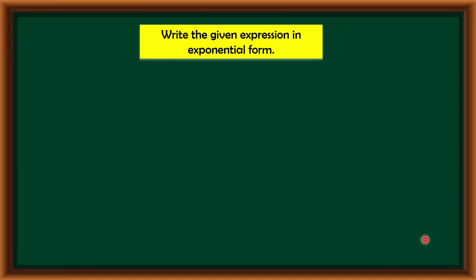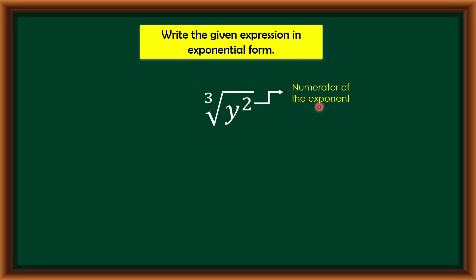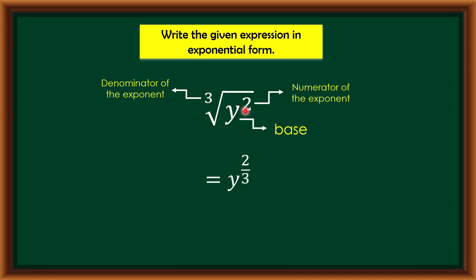Let us now move on to writing the given expression in exponential form. In our first activity we wrote expressions into radical form; now we will write them into exponential form. For example, we have the cube root of y squared. To rewrite this in exponential form: the exponent in the radicand will be the numerator of the exponent, the index 3 will be the denominator, and the base inside the radical symbol will be the base. Therefore the answer is y raised to 2 over 3 — 2 becomes the numerator, the index becomes the denominator.